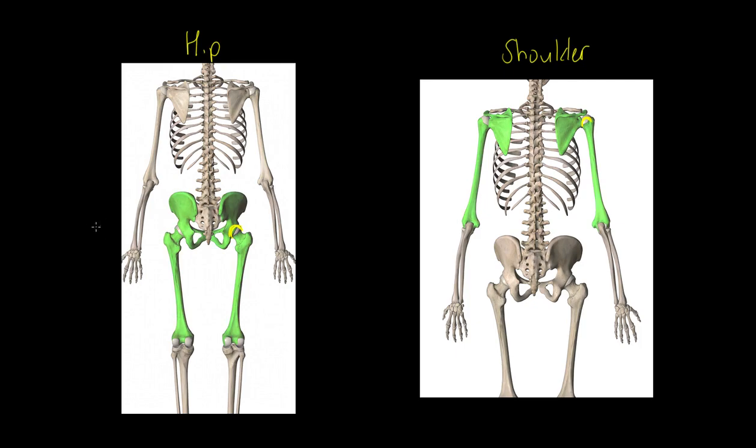The pelvis is actually a collective term for a few different bones. The other articulating bone is the femur. If we come back to what we said about the knee, the femur articulates at both the hip and the knee. The top of the femur articulates at the hip, the bottom at the knee.